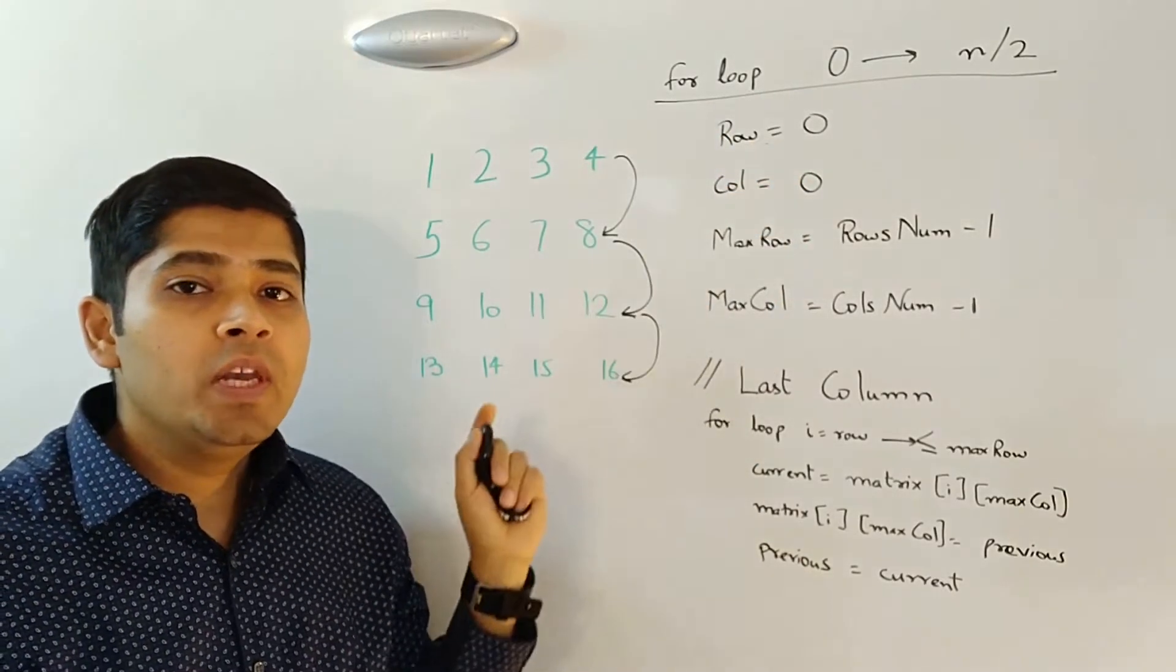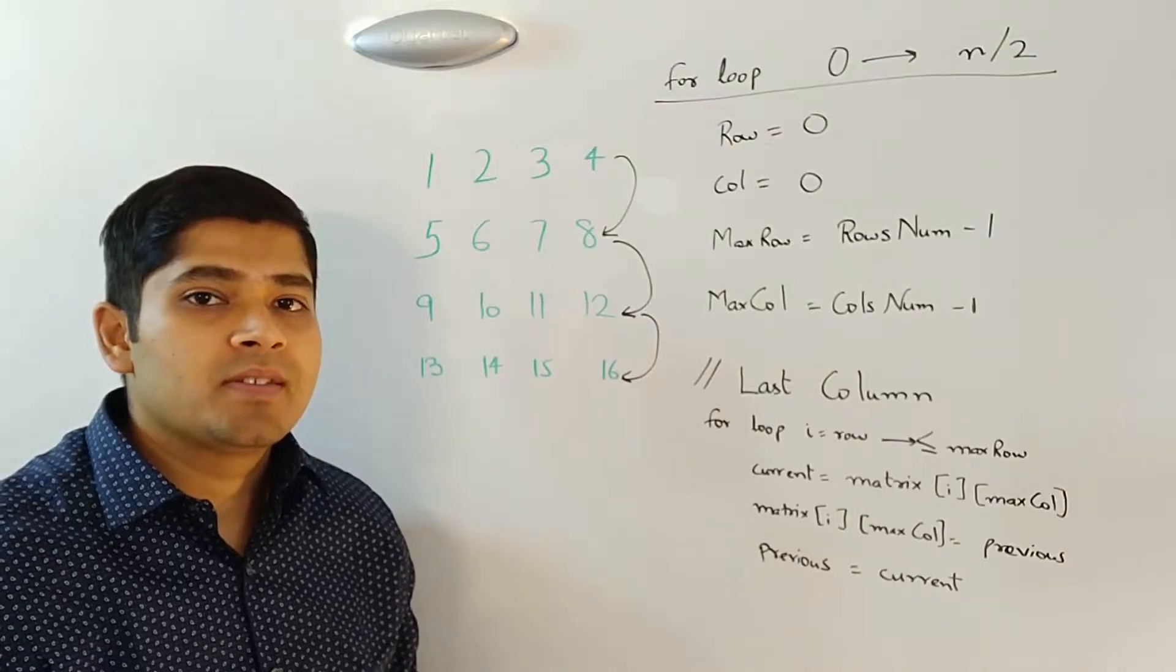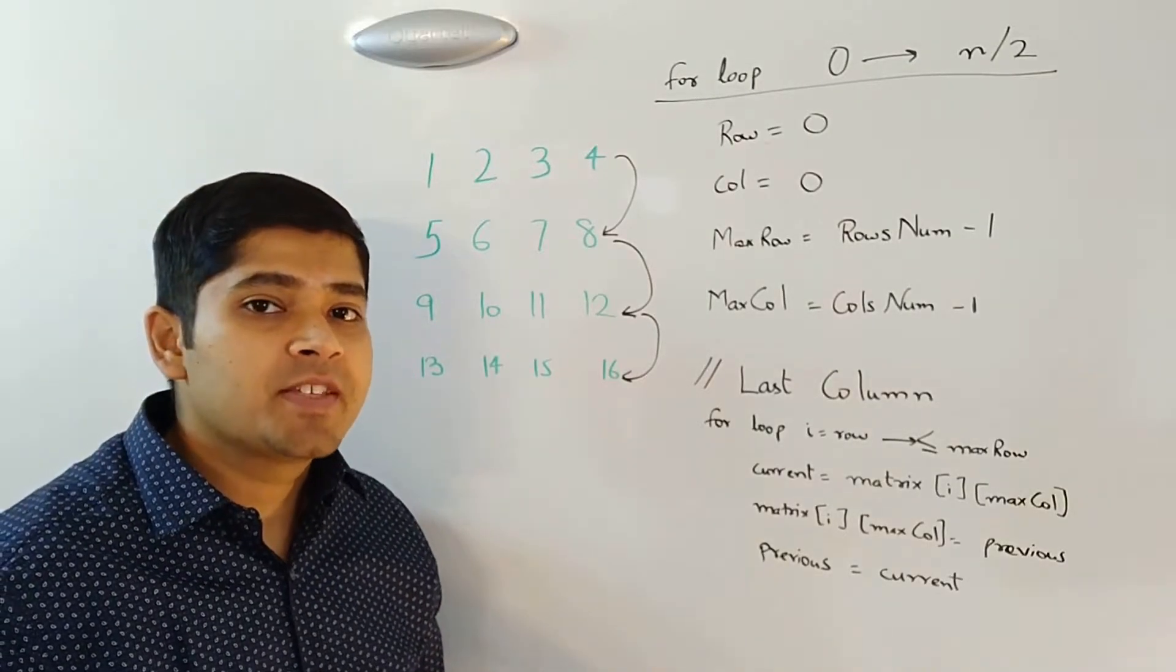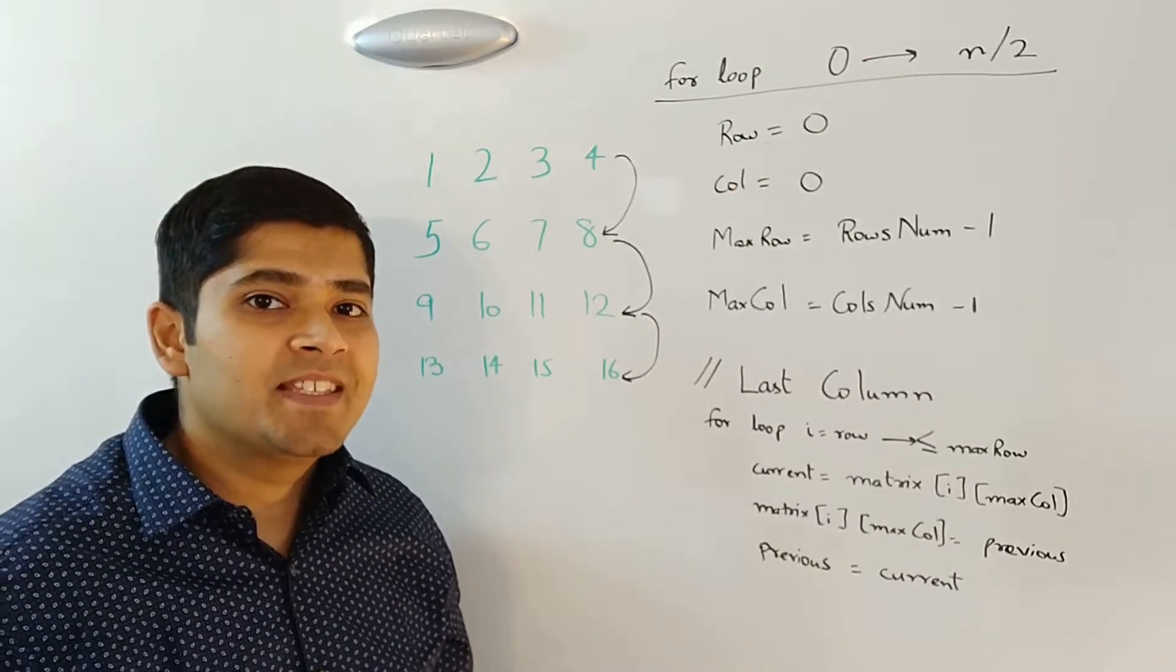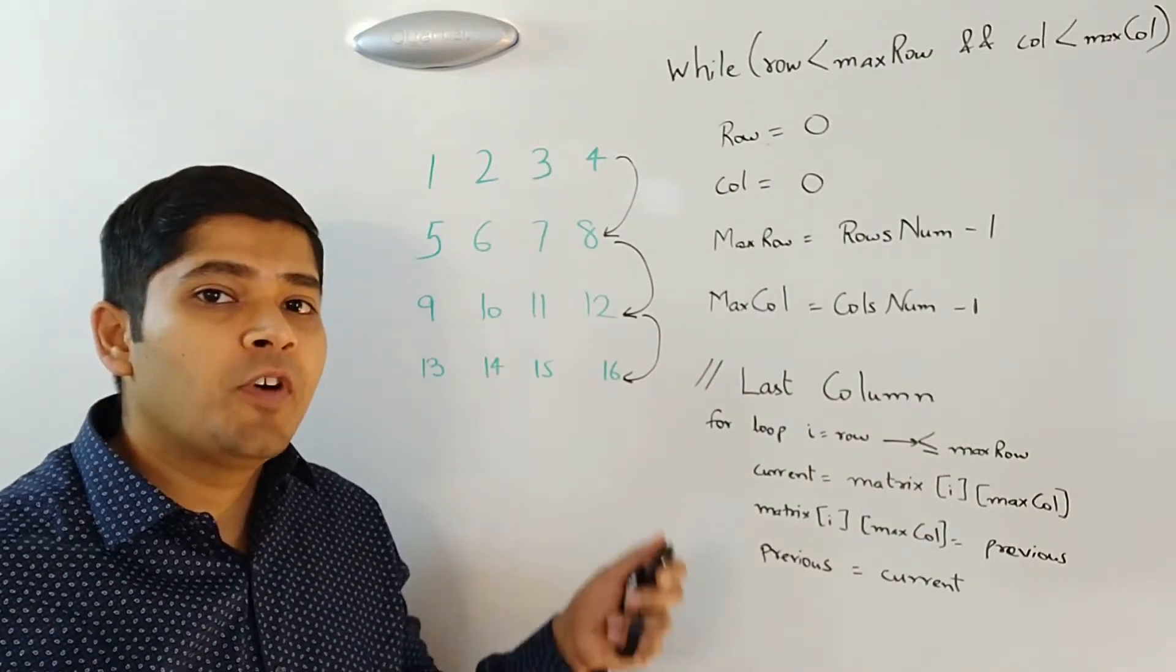this technique will work only in case of a square matrix. For a rectangular matrix, the size n over 2 might not make much sense. So instead of using the for loop,